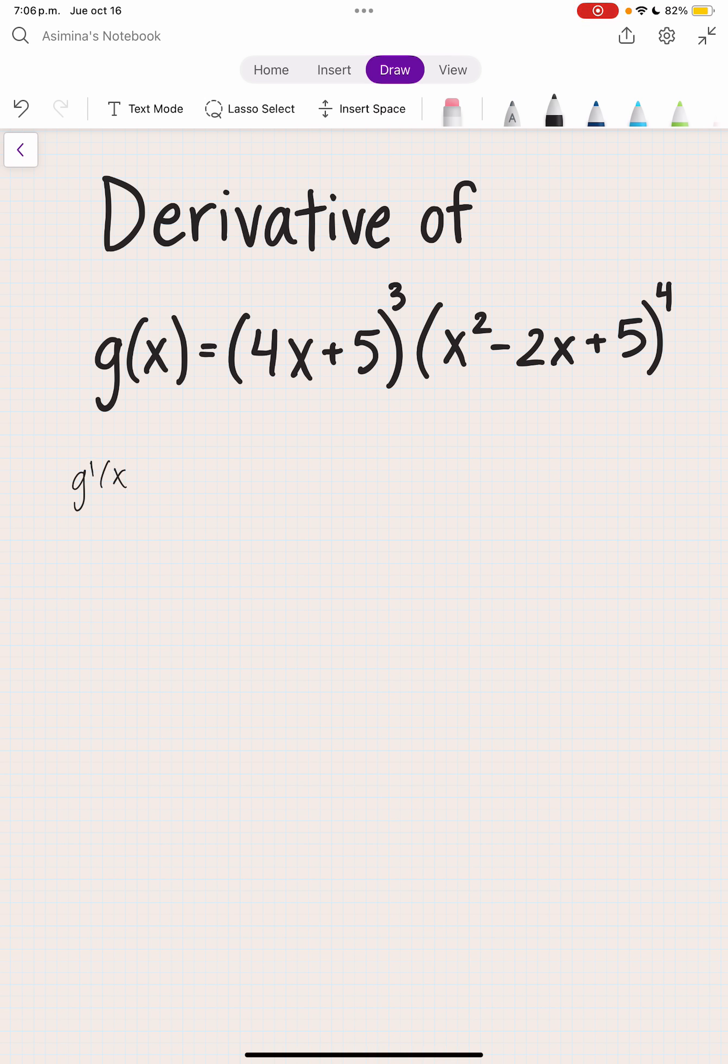So g'(x) is going to equal (4x + 5)³ times the derivative of (x² - 2x + 5)⁴ plus the derivative of (4x + 5)³ times (x² - 2x + 5)⁴.